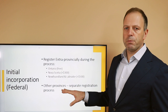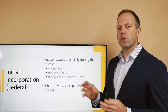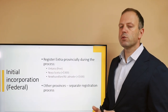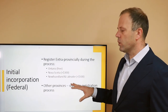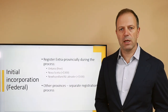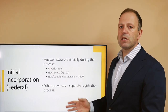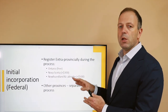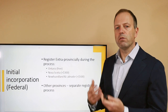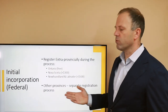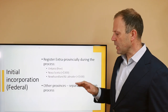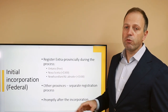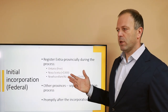All other provinces will require you to register your corporation with them separately. You first complete the federal incorporation, get your articles of incorporation, your documents, your business number, and then you go register in the province where your offices are located. Provinces like British Columbia allow you to do it online with a more streamlined process, while Alberta, for example, requires you to physically attend one of the service provider locations and file the registration documents there. This should be done promptly after completing incorporation, and even before you start business operations in that province.